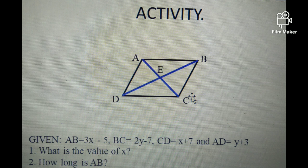So let's apply what we learned about the properties of parallelogram in this activity. The given are AB equals 3X minus 5, BC equals 2Y minus 7, CD equals X plus 7, and AD equals Y plus 3. We have two questions to answer. Number 1, what is the value of X? And then number 2, how long is AB?